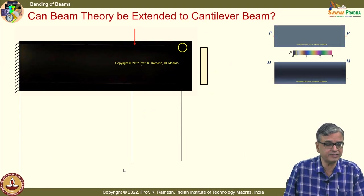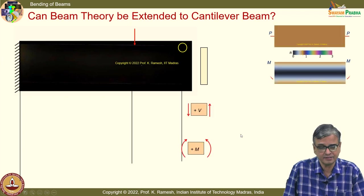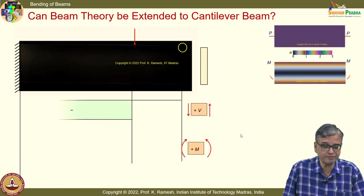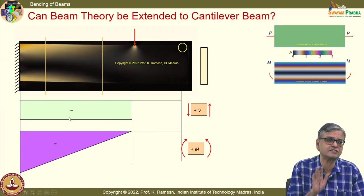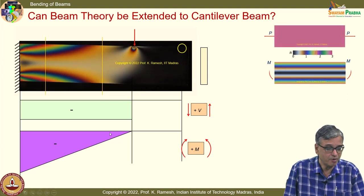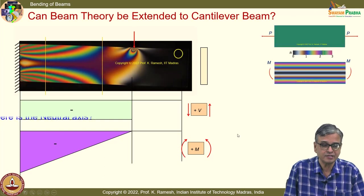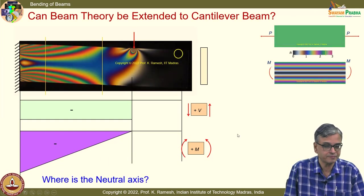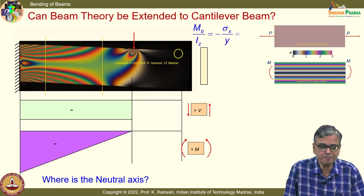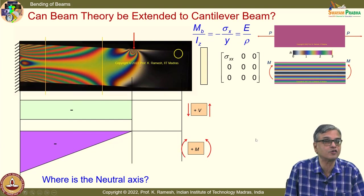We raised the question: can beam theory be extended to a cantilever beam? In the cantilever beam, in addition to bending moment, it also transmits a constant shear. Even a simple constant shear modifies the bending moment along the length of the beam. The recipe here is to use the flexure formula and pick out what is the bending moment at that cross section, then find the bending stress.